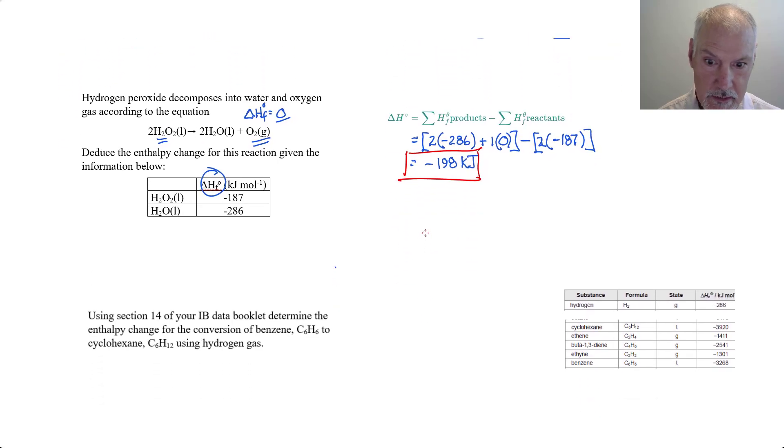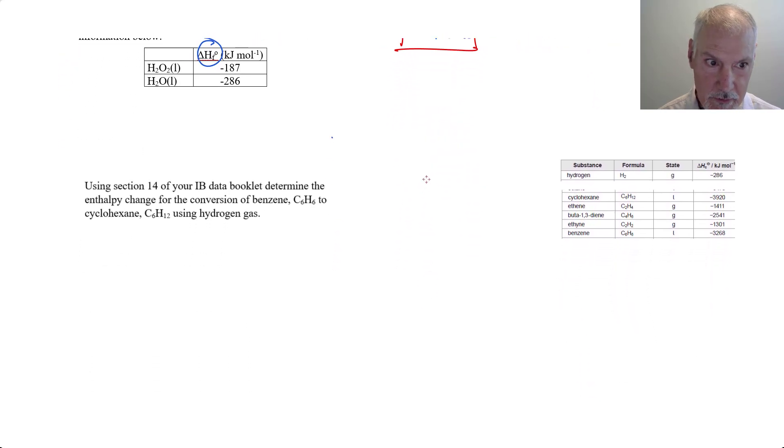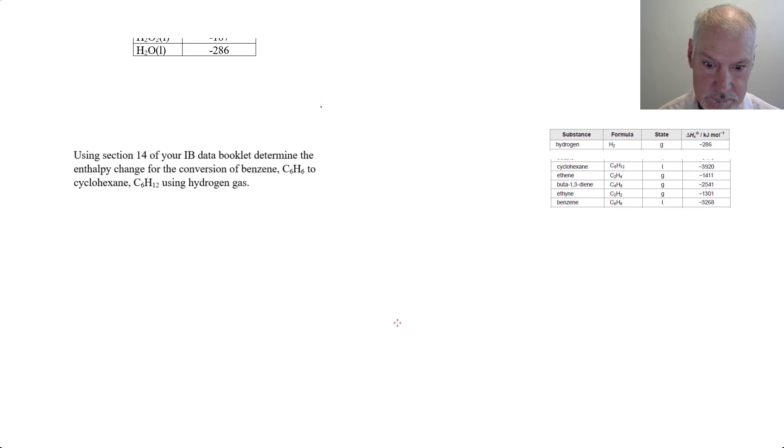Let's try one using the other relationship. This question refers to section 14, which is the enthalpy of combustion data in our IB data booklet. First we need to come up with an equation for this before we can apply the equation.